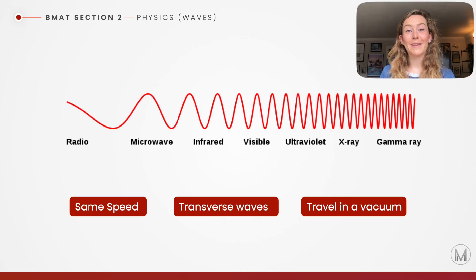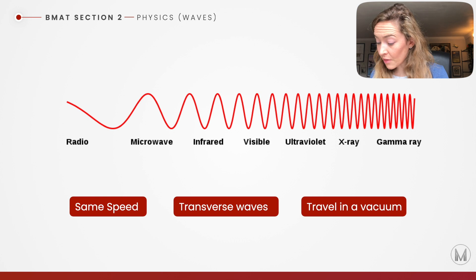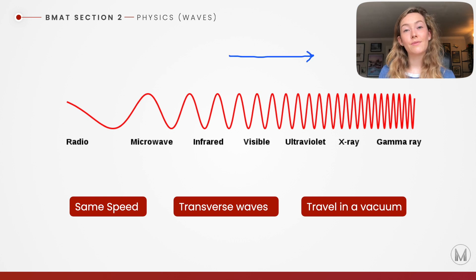The electromagnetic spectrum is made of waves with specific properties. They all travel at the same speed and that's the speed of light. They are transverse waves, which means that they vibrate 90 degrees to the direction in which they travel. My blue arrow is the direction in which I'm traveling and then they vibrate at 90 degrees to that direction. Finally they travel in a vacuum. Remember, a vacuum is where there's no other matter or particles.